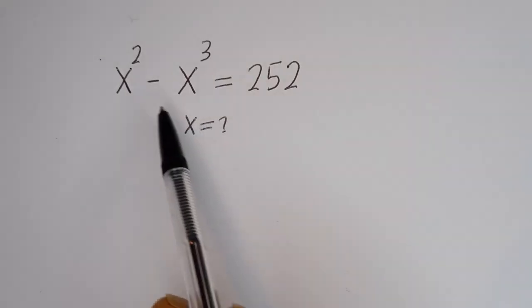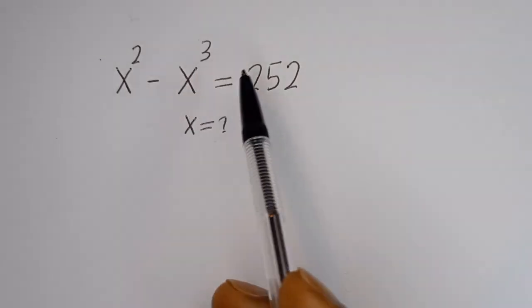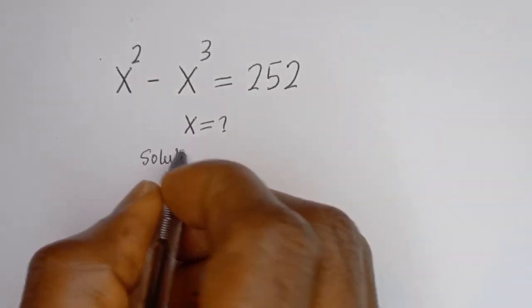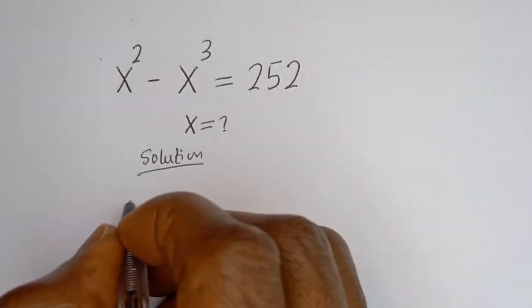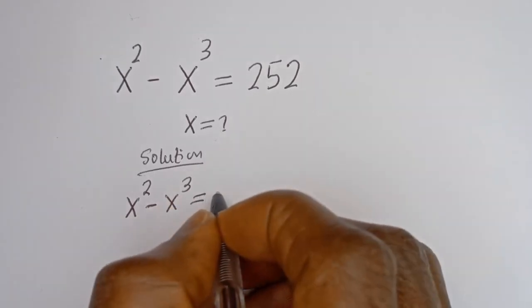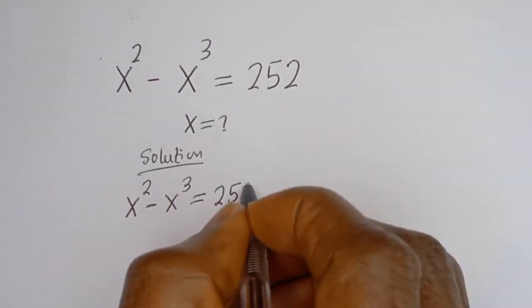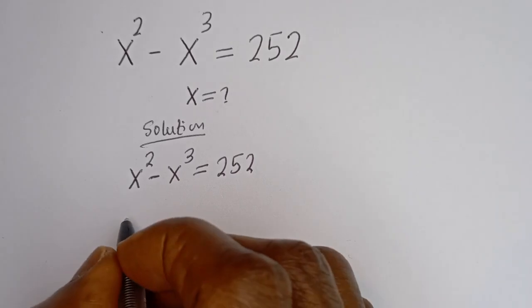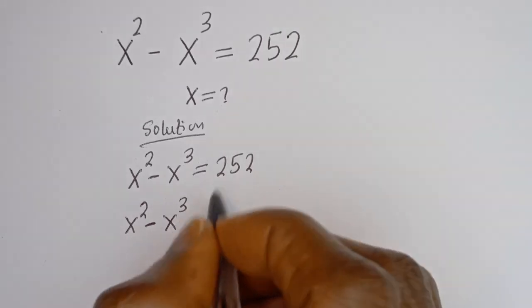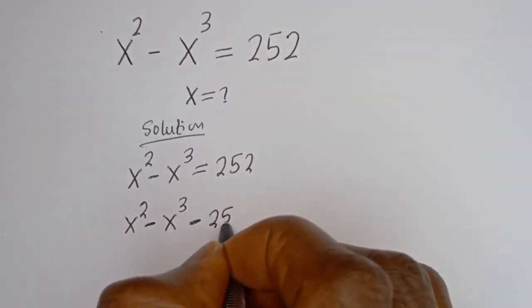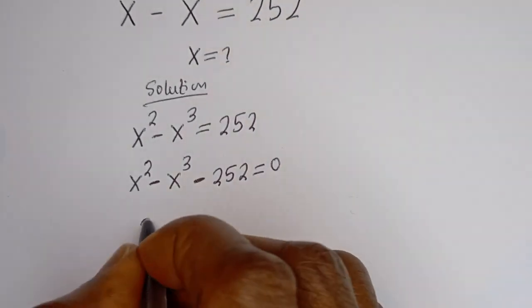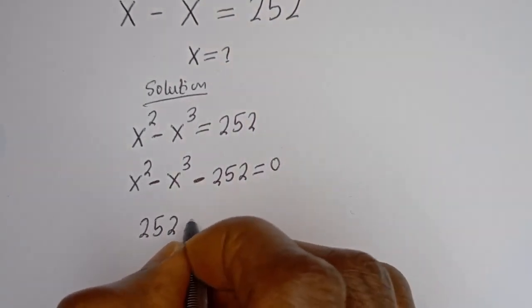How to solve for s in this equation: s squared minus s to the power of 3 is equal to 252. Solution: we have s squared minus s to the power of 3 equals 252, which we rewrite as s squared minus s to the power of 3 minus 252 equals 0.